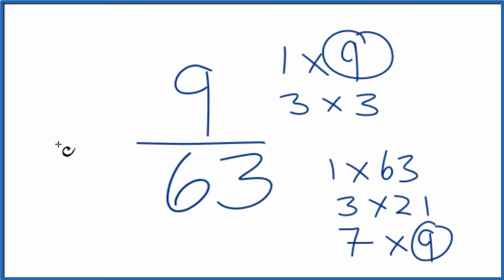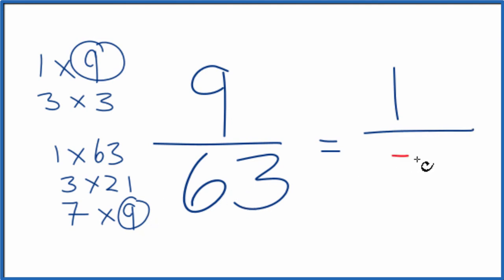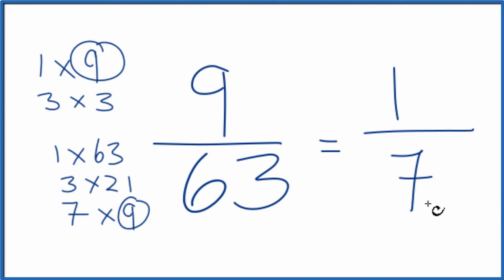So 9 divided by 9 is just 1, and 63 divided by 9 is 7. We've simplified 9 over 63 down to 1 over 7. These are equivalent fractions — 9 divided by 63 and 1 divided by 7 are the same number. We've just simplified and reduced 9/63 down to 1/7.